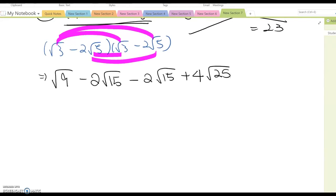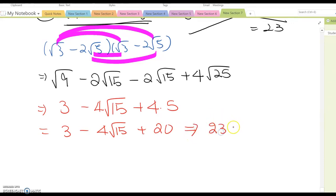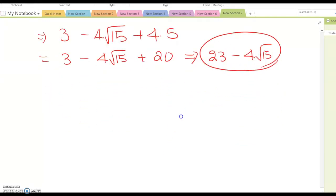Okay, now simplify if it is possible. Then this becomes 3 minus 4 root 15 plus 4 times 5, so 3 minus 4 root 15 plus 20. So the final answer will become 23 minus 4 root 15. That will be the answer. Then one last question, maybe Q.